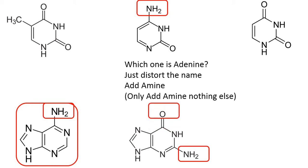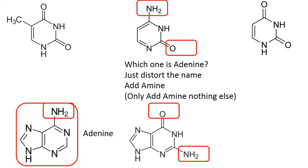On the other hand, the rest of the two structures have two branches — one is amine and the other is oxygen. Similarly, the other structure also has an amine group and oxygen. So the one with only amine and nothing else is surely the adenine structure.